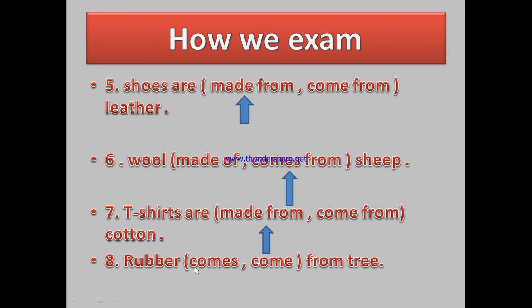Number eight: Rubber (comes / come) from tree. Look — 'rubber' is singular. In simple present, a singular subject takes the verb with -s (third person). So we choose 'comes' — because rubber is singular. If the subject is plural we use the bare form 'come'. Here we depend on the subject: singular → comes, plural → come (base verb).